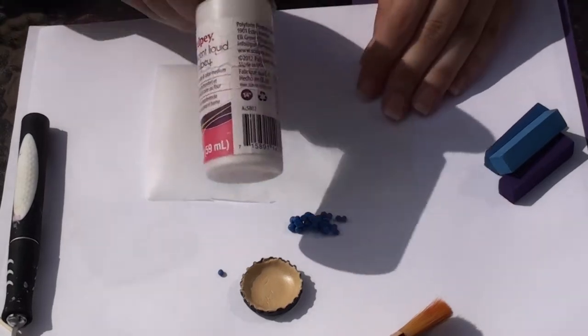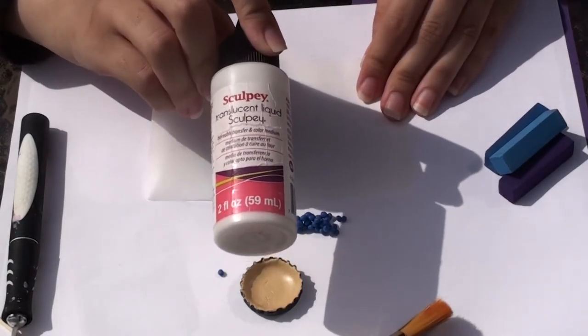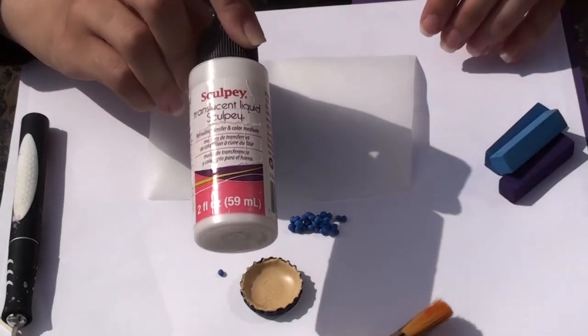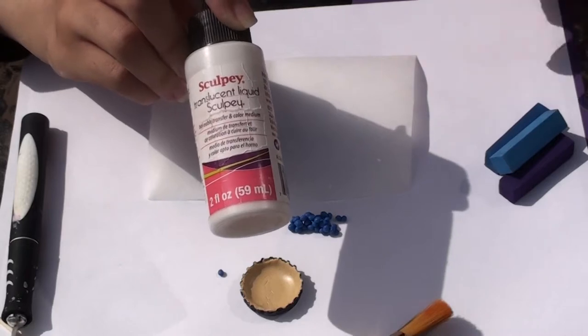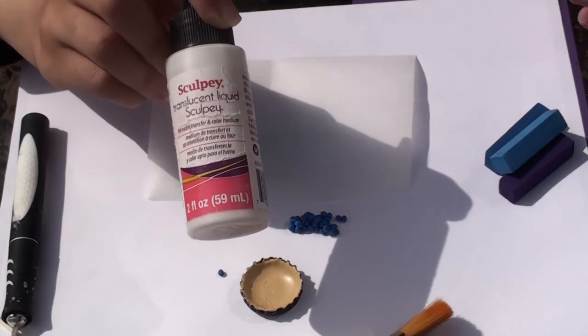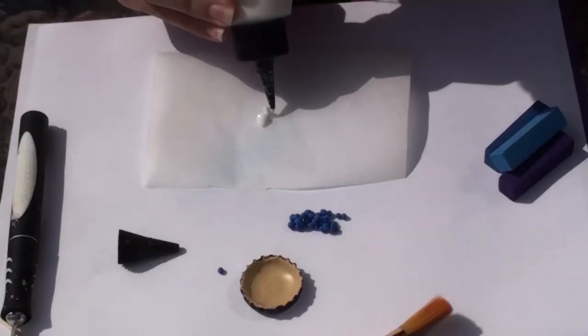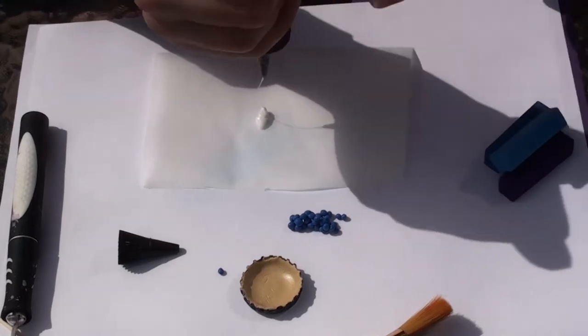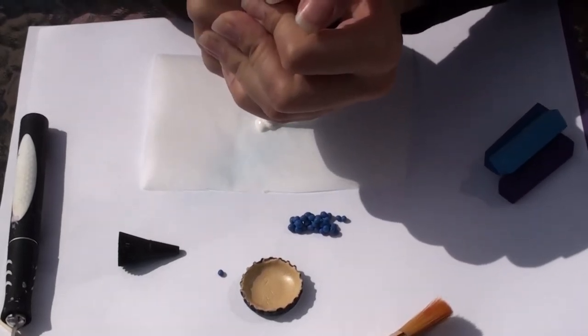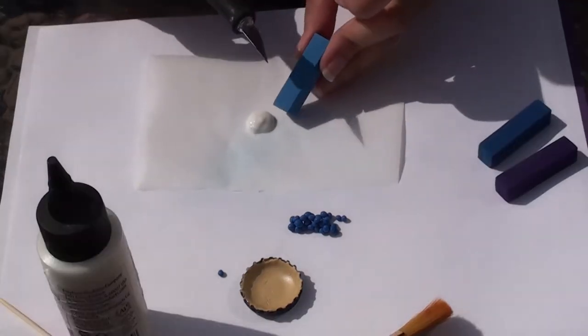This is called Translucent Liquid Sculpey. It's a liquid form of the Sculpey brand polymer clay and can be baked and hardened in the oven. It's usually used to create liquid looking elements in your creations such as sauces or soups. We will be using it to make the filling of our pie look like a juicy pie filling. Squeeze out a generous amount and we will be coloring it using chalk pastels in these three shades to achieve a deep blue color. Mix this thoroughly and add in your blueberries then transfer them into the bottle cap.